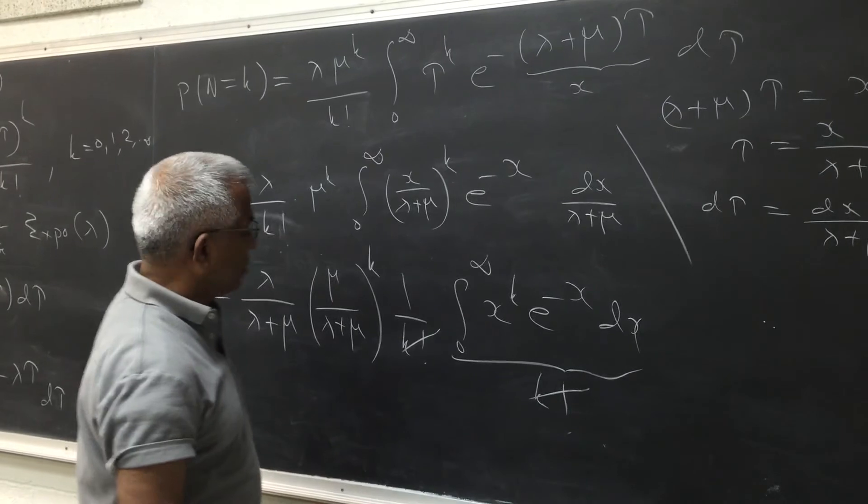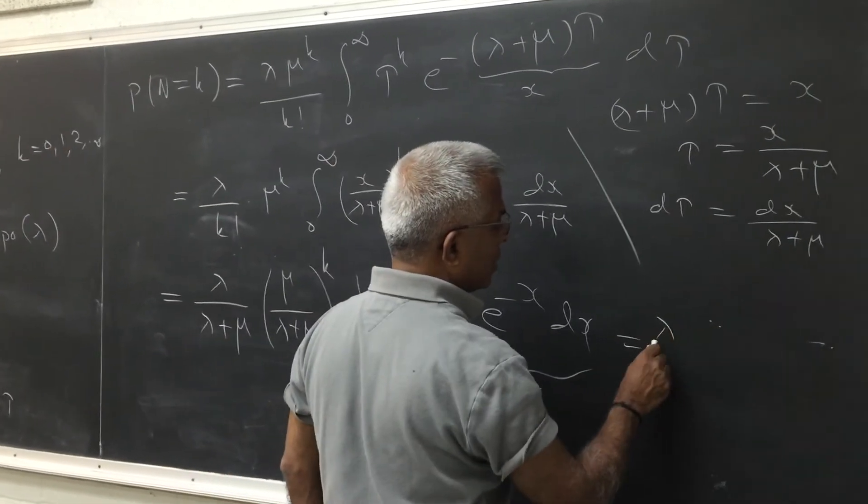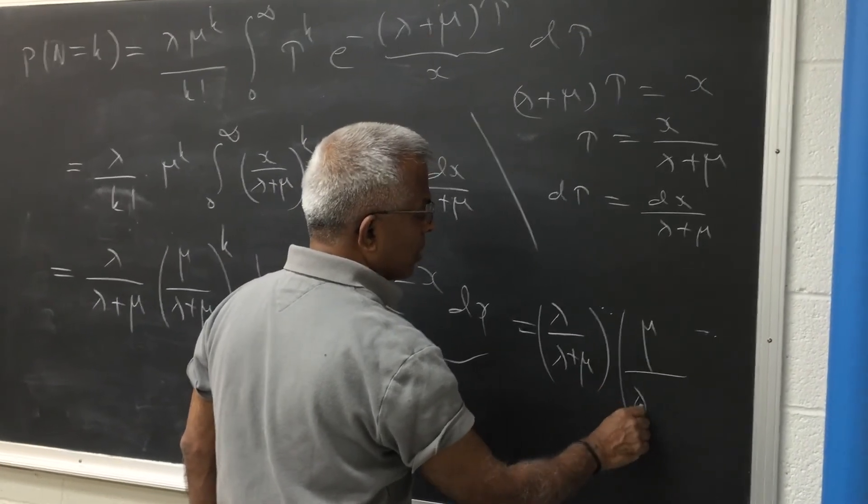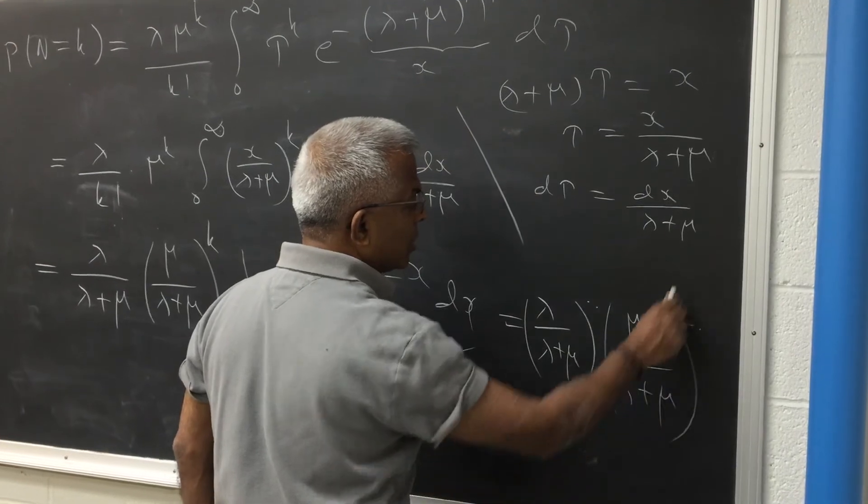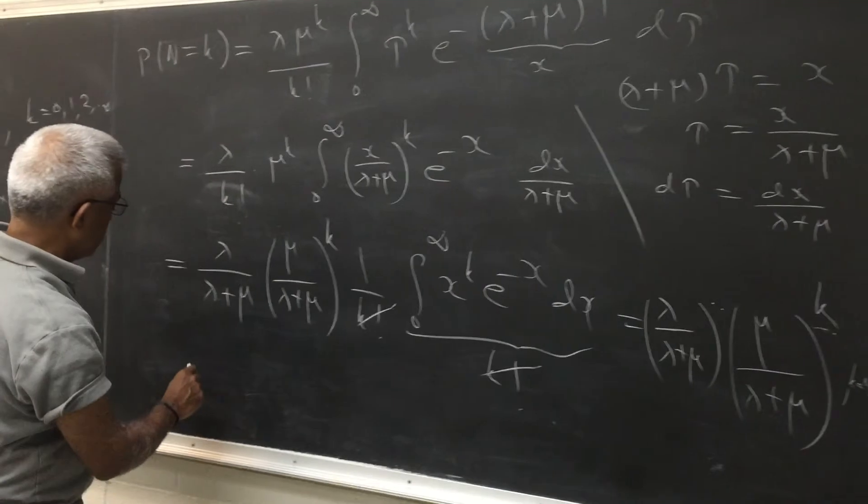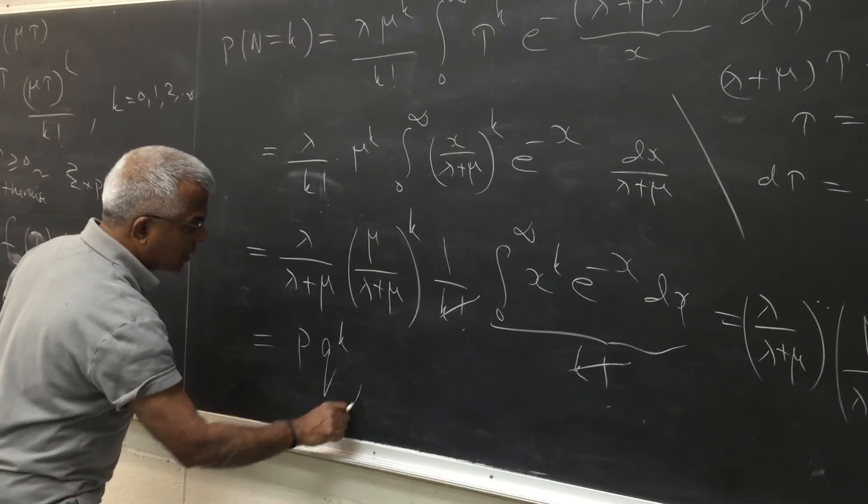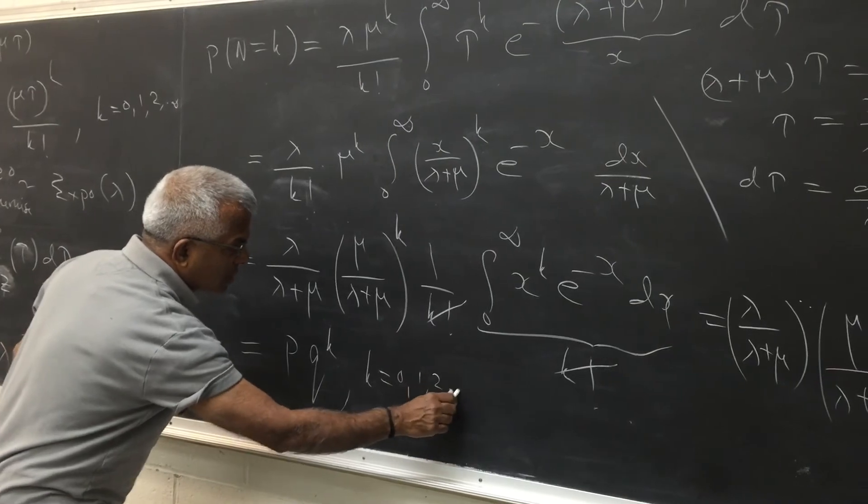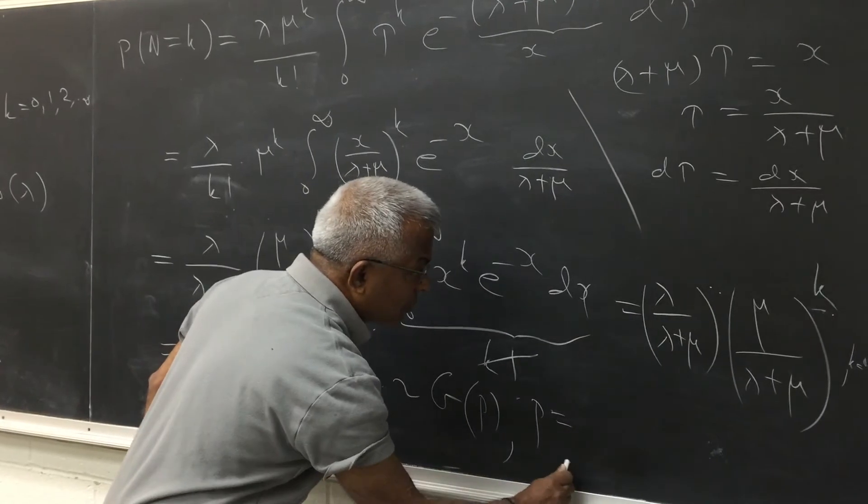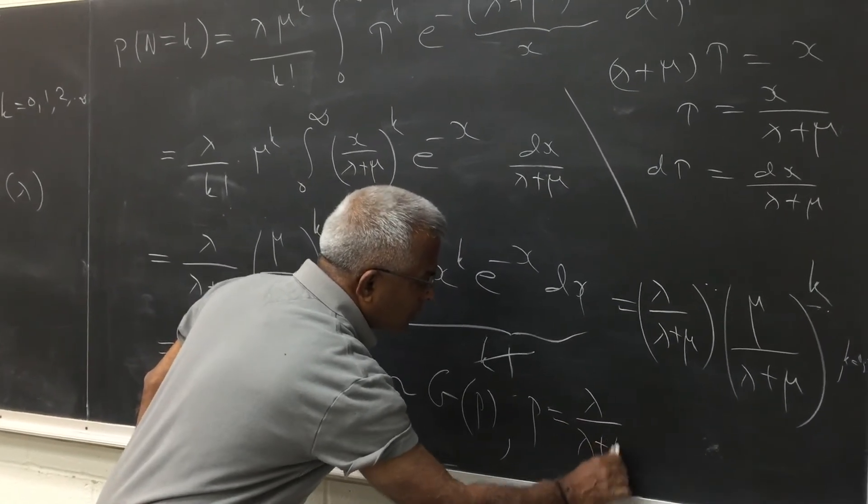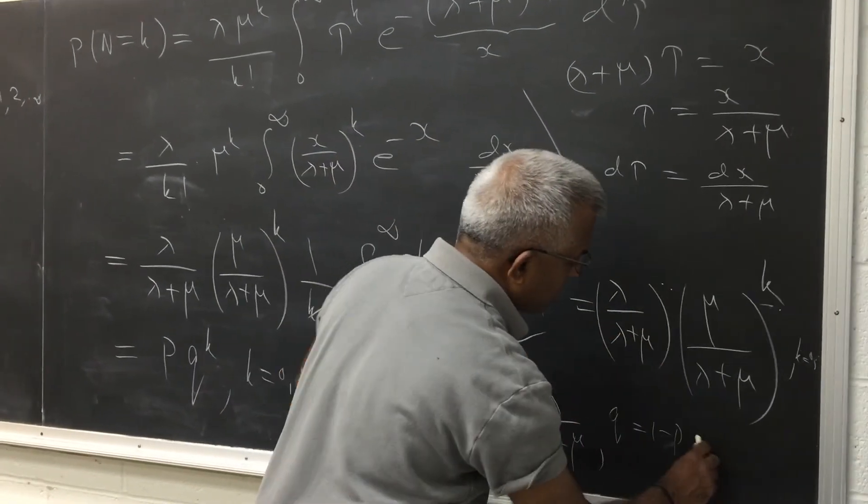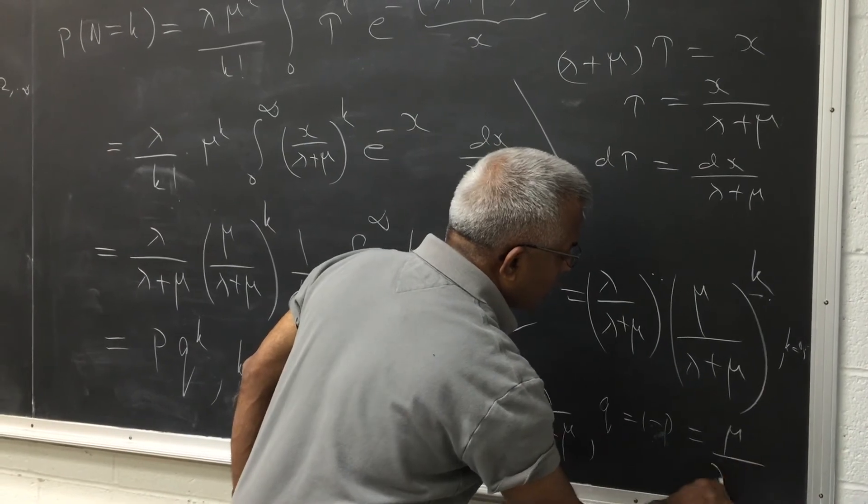Of course, you get the result to be lambda over lambda plus mu multiplied by mu over lambda plus mu to the power k, k equal to 0, 1, 2, 3, etc. This of course, as you can see, you can write it as p q to the power k, k equal to 0, 1, 2, 3, etc., which is of course geometric with parameter p, where p is of course lambda over lambda plus mu. And q which is 1 minus p, you can see it will turn out to be this quantity mu over lambda plus mu.